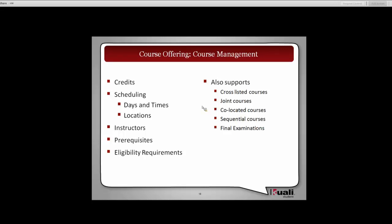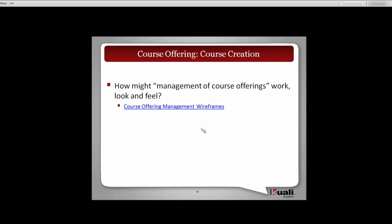In Kuali Student we're also supporting these other concepts. I'm not going to talk about them in great detail, but these are all part of it. That's dealing with how we group courses, whether they're cross-listed or joint courses, or courses that are co-located in a single location. Sequential courses that run or span the terms. And the concept of final exam is also part of the course offering itself. With that I'm going to turn it back over to Christina and she will give you a sense of where we are on the wireframes.